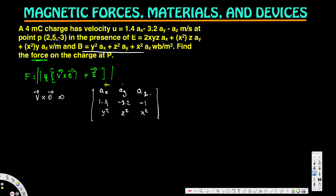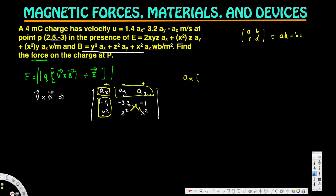Using the plus-minus-plus sign pattern for the determinant, we compute the ax component by eliminating the ax row and column. The ax term gives: (-3.2)(x²) minus (z²)(-1), which simplifies to -3.2x² plus z².